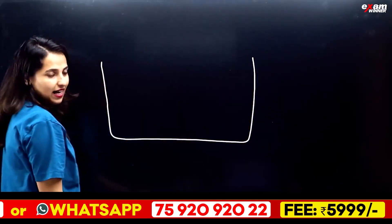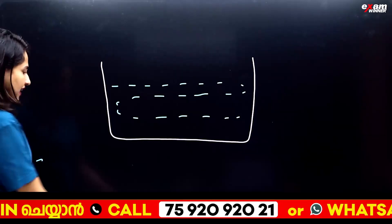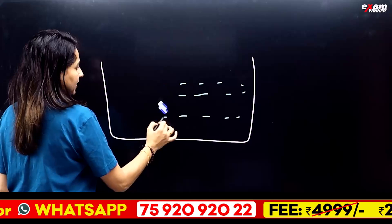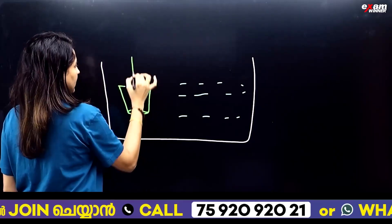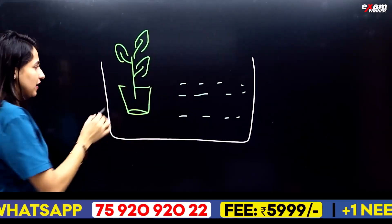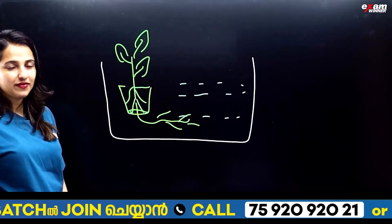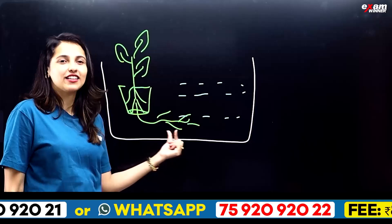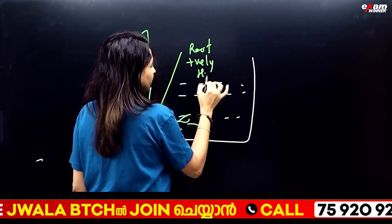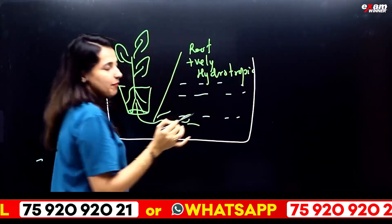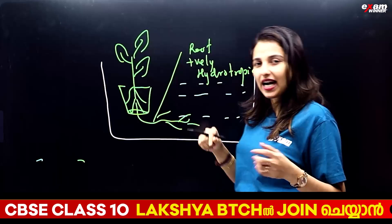Let's take a tank and put a side light here. We will put a pot and plant here. If there is a water stimulant, the root will grow and move towards it. So the root is positively hydrotropic. The stem, on the other hand, is negatively hydrotropic.